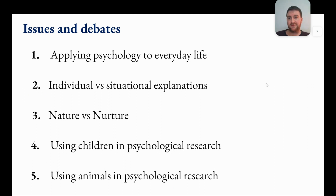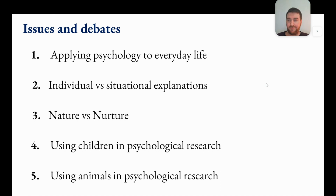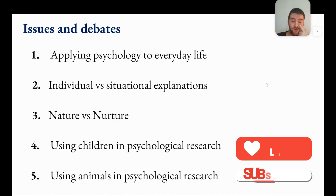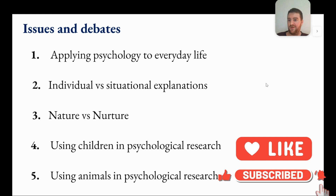So those are the five issues and debates you need to know. Applying psychology to everyday life is about how useful research is. Individual versus situational explanations is about whether we explain behavior using characteristics of an individual or the situation they are in. Nature versus nurture is also about how we explain behavior and who people are — is it down to biology or learning? And the last two are largely about ethics — whether it is ethical to use children and whether it is ethical to use animals in research. If you want to know about the five issues and debates at A-level, keep an eye out — I will make a video on those soon.